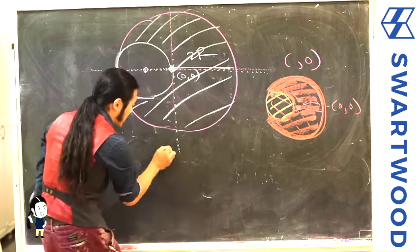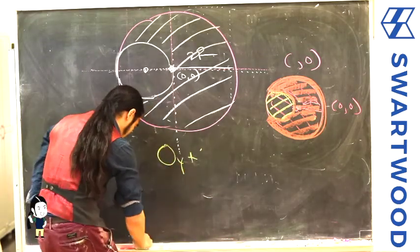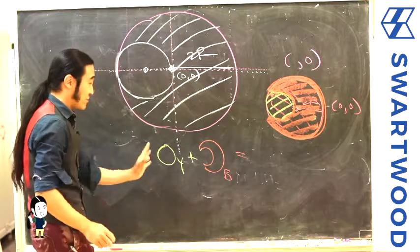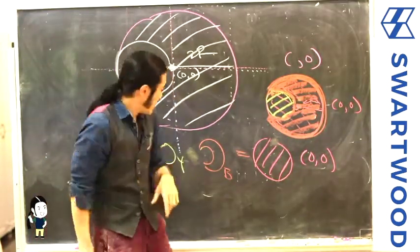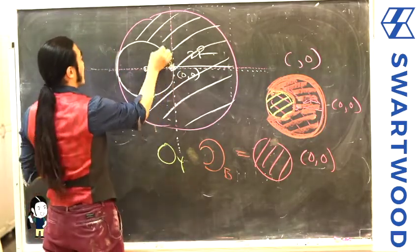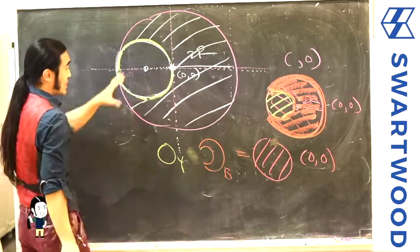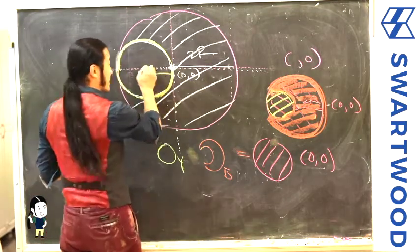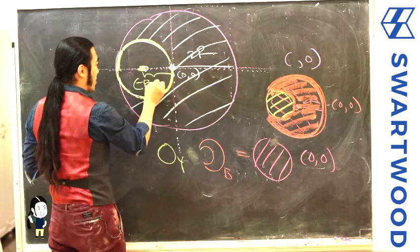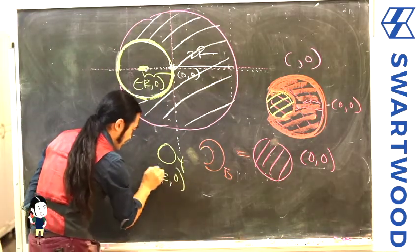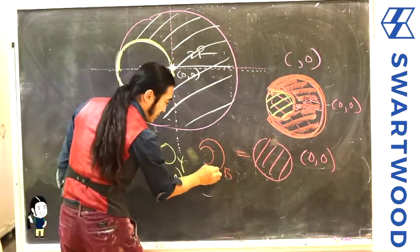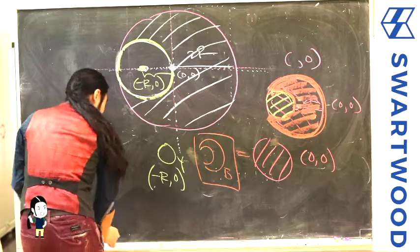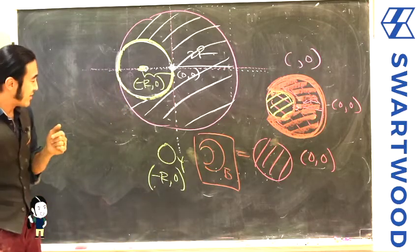So if you take the yellow disk and add it to the brown crescent, you get the full disk. The yellow disk, if you draw it separately, is perfectly symmetric, so its center of mass is right in the center. Since it has radius r and our origin is zero, zero, the yellow disk's center of mass coordinate is negative r comma zero. So the center of mass of the yellow disk is at (−r, 0).